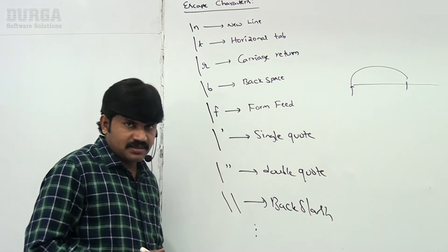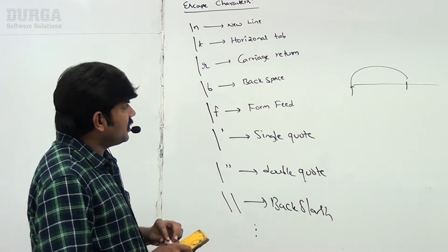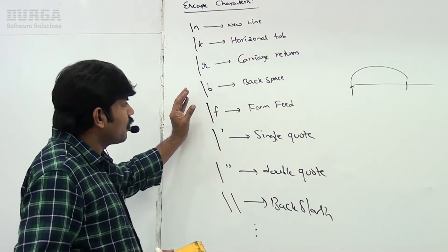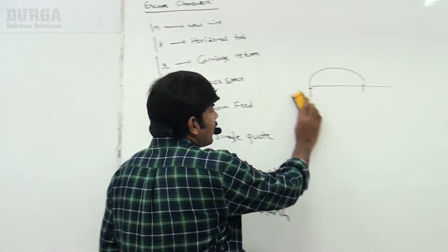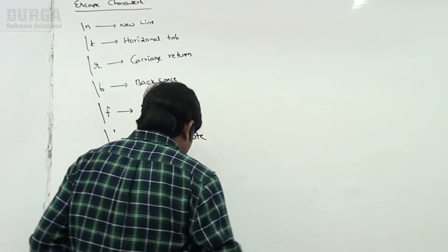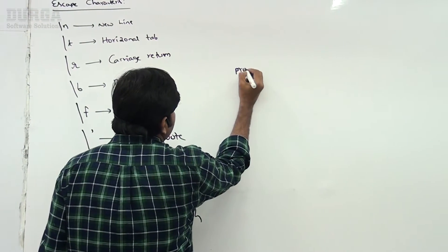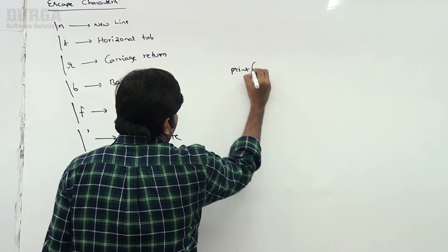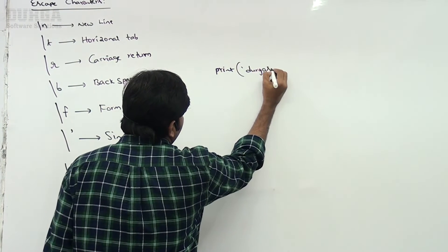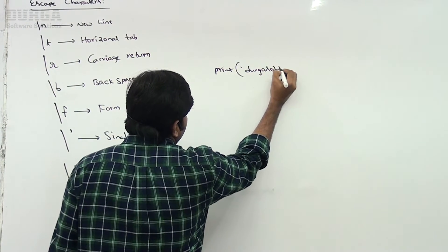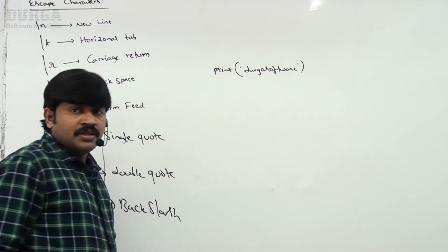Multiple escape characters are available in Python. Let me provide a basic idea of how you can use them. For example, I'm taking print of 'Durga software' — it's going to print fine, no problem at all. But if I use backslash t inside: 'Durga\t software'...